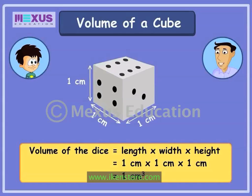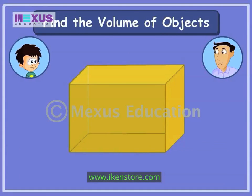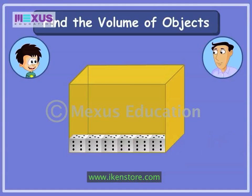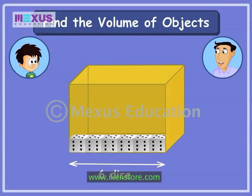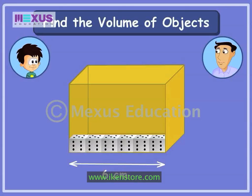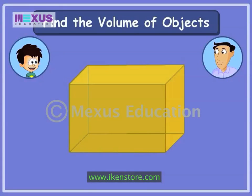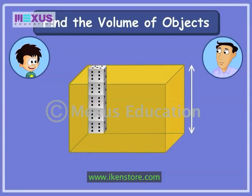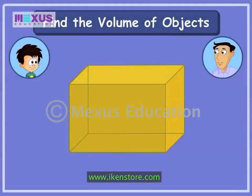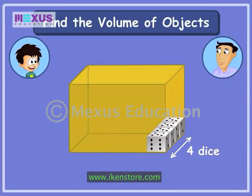We will now find out the volume of the pastry box with the help of the volume of this dice. To find out the length of the pastry box, we will place the dice along its length. We placed six dice along its length. So, the length of the pastry box is six times the length of this dice, that is six centimetres. Now, let's find the height of the pastry box. We have placed five dice along its height. So, the height of the pastry box is five centimetres. As four dice are placed along its width, it measures four centimetres.